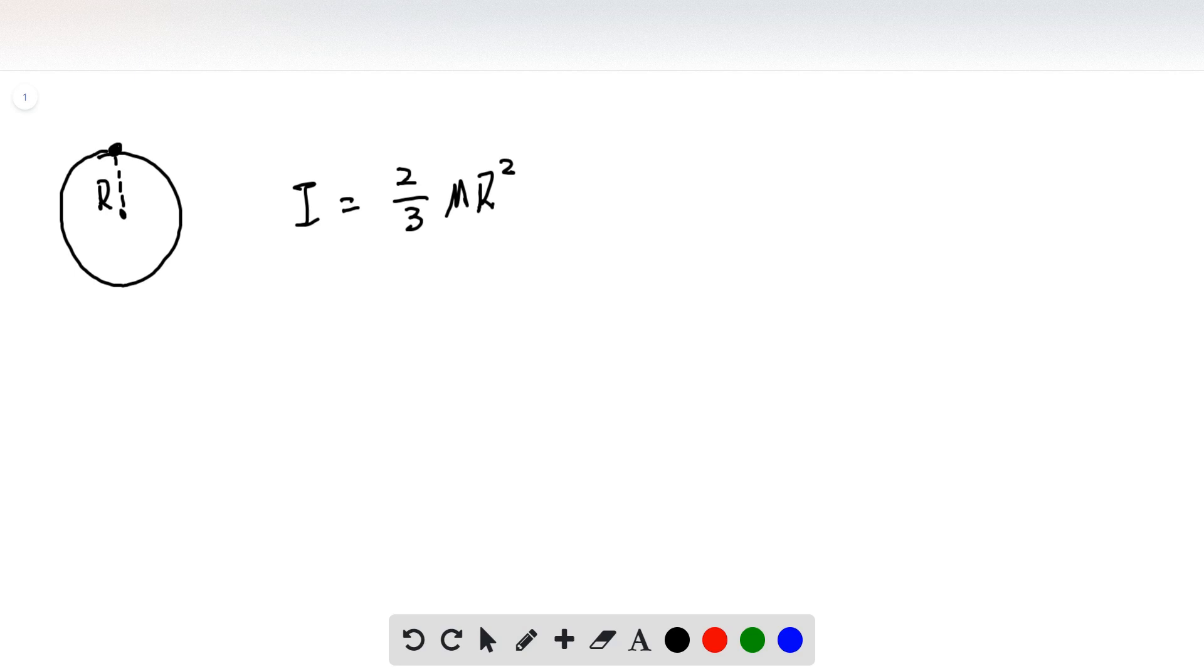So the new moment of inertia should plus the mass times the distance between the new rotating axis to the center of mass, which is the mR squared. We can get 5 over 3 mR squared. So that's the new moment of inertia.